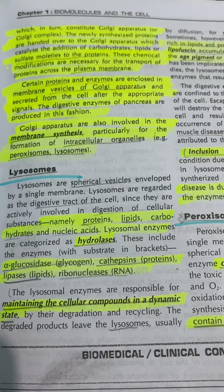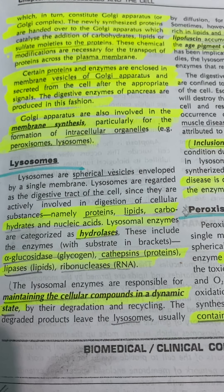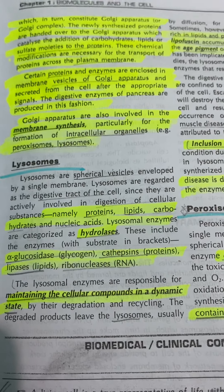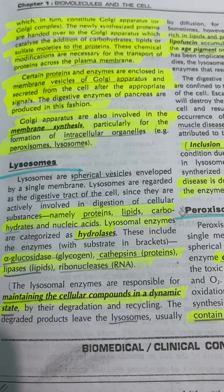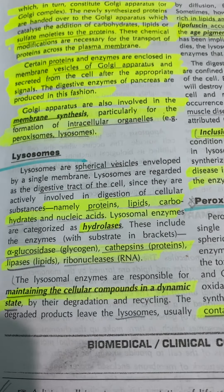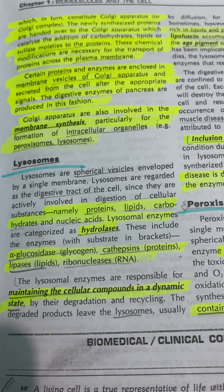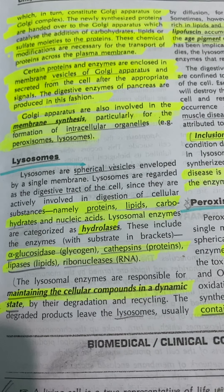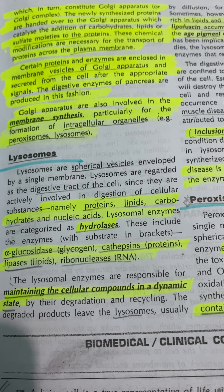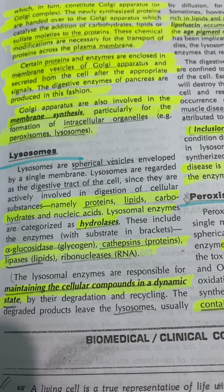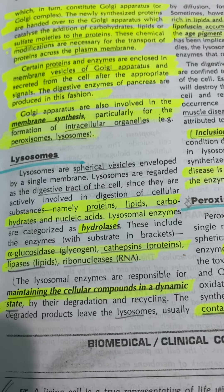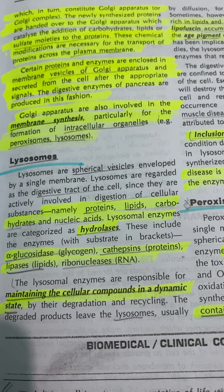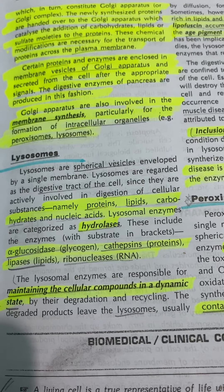Proteins and enzymes enclosed in membrane vesicles of the Golgi apparatus are secreted from the cell after the appropriate signal. The digestive enzymes of the pancreas are produced in this fashion. The Golgi apparatus is also involved in membrane synthesis, particularly for the formation of intracellular organelles.